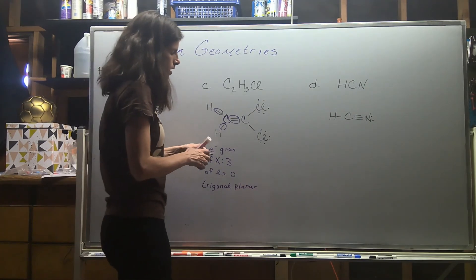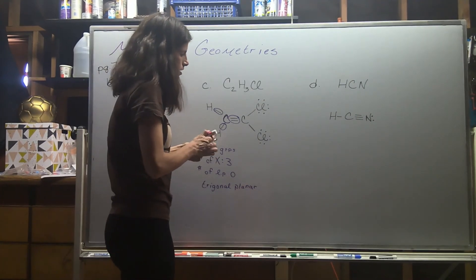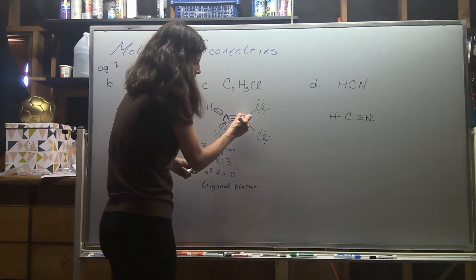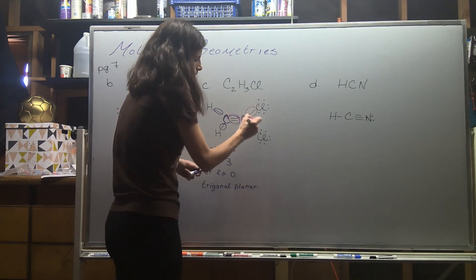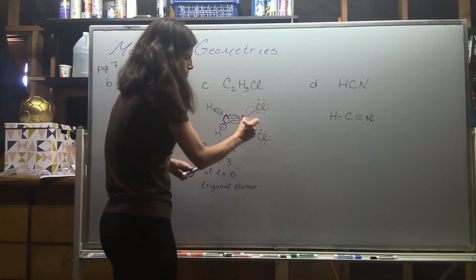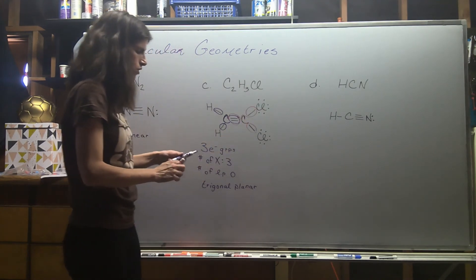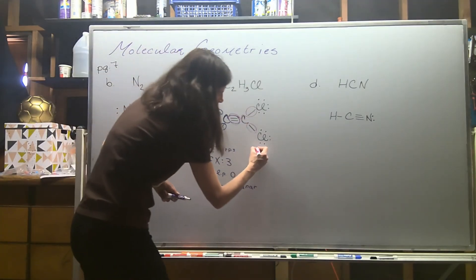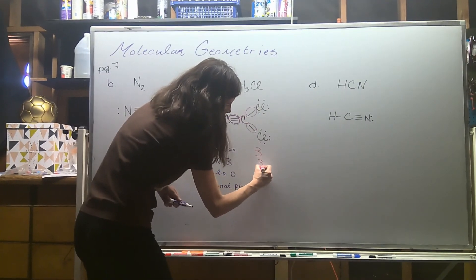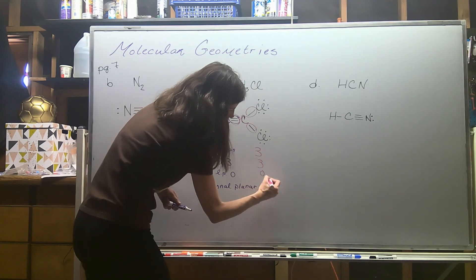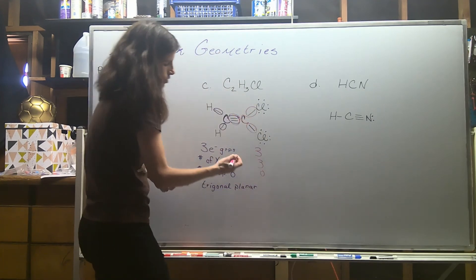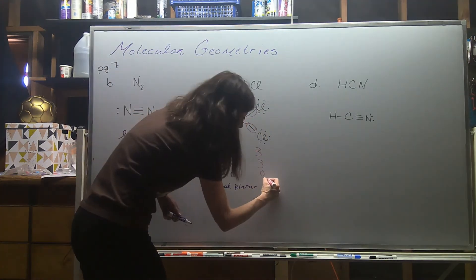The other carbon on the other side also has three electron groups, all bonding groups — also a 3-3-0. This carbon is also trigonal planar.